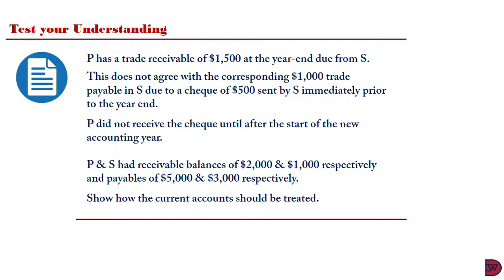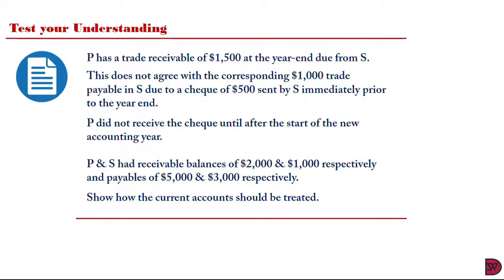Let's test our understanding. P has a trade receivable of $1,500 at the year end due from S. This does not agree with the corresponding $1,000 trade payable in S due to a check of $500 sent by S immediately prior to the year end. P did not receive the check until after the start of the new accounting year. P and S had receivable balances of $2,000 and $1,000 respectively and payables of $5,000 and $3,000 respectively. Show how the current account should be treated.